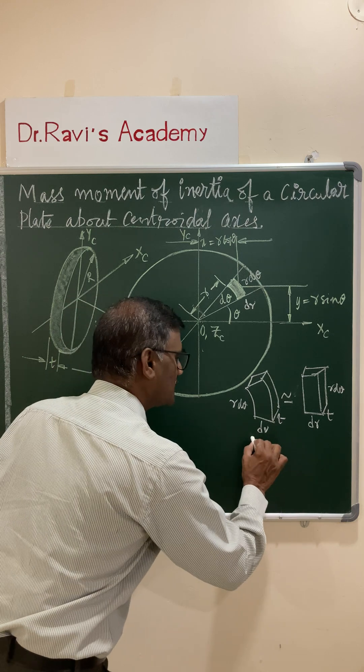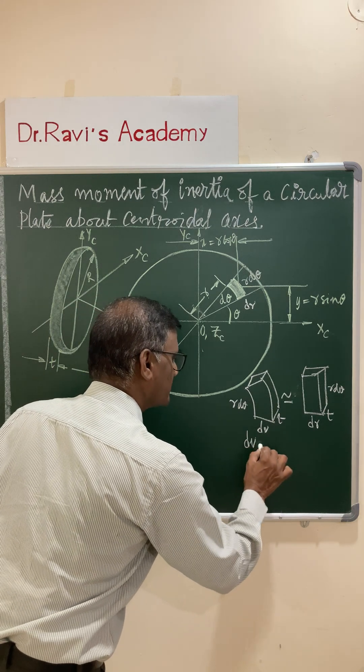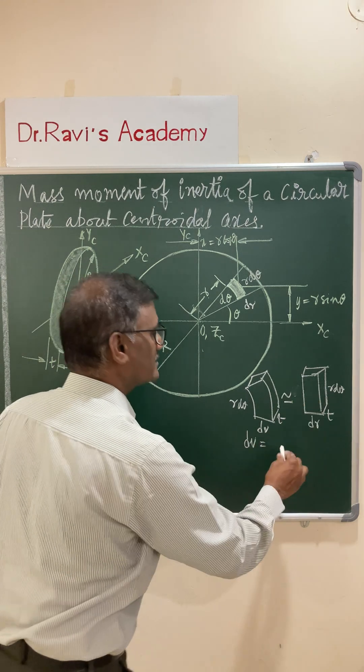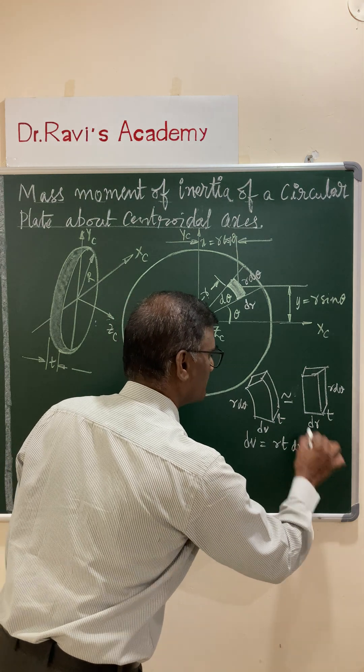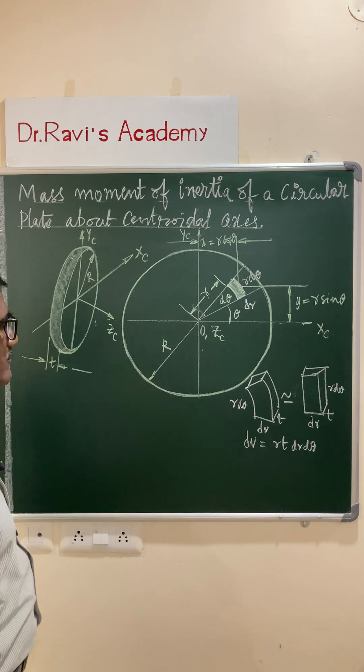You can write down the expression for the elemental value dv. Multiplication of all three dimensions, it is r t dr d theta. This is the elemental value.